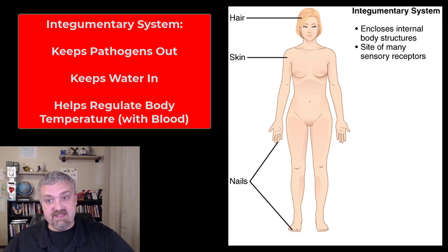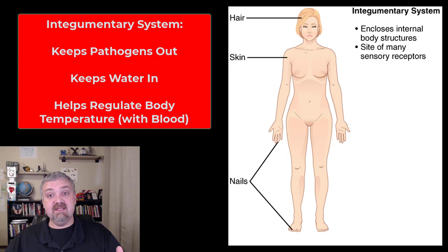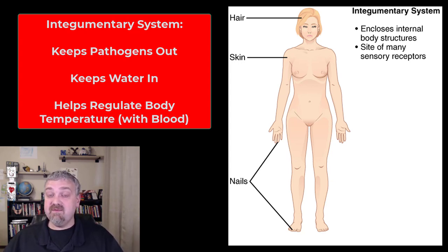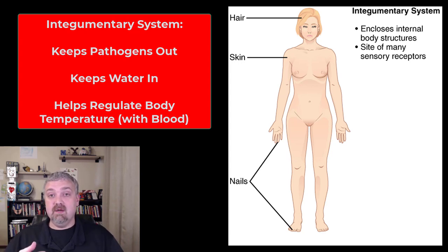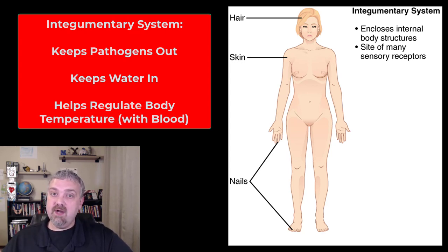The first one is the integumentary system — the skin and all its accessory structures: skin, hair, nails. It encloses internal body structures, so obviously it is a barrier. Your skin keeps things out, primarily pathogens, which is why it's part of your immune system. If you have a cut, a hole from surgery, or a burn, it's much easier to get infectious diseases because pathogens have a new portal into your body. But it also keeps things in, primarily water, so skin is very important to prevent water loss.